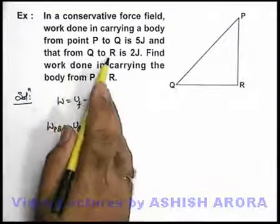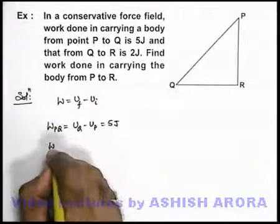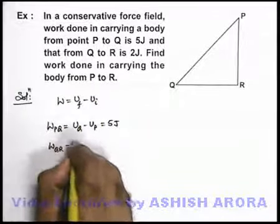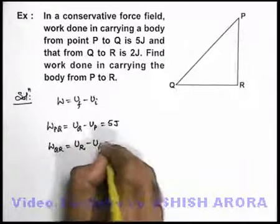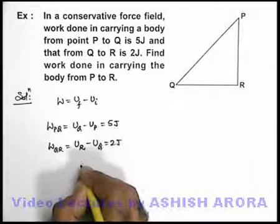Similarly, when the body is taken from Q to R, it is 2 joules. Work done in going from Q to R can be written as potential energy at position R minus potential energy at position Q, which is 2 joules.